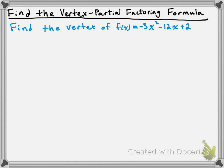So what we're going to do is make use of a formula that gives us the axis of symmetry. The axis of symmetry formula is given by x = -b / 2a. Since the axis of symmetry is a vertical line, it takes the form x equals some number, and that number is calculated by taking negative b divided by 2a.